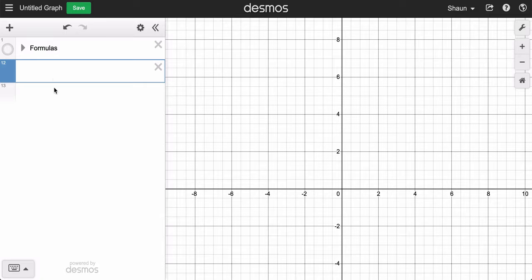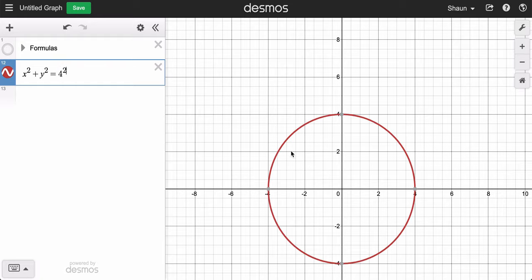You can create a circle centered at the origin by simply typing x squared plus y squared equals the radius squared, whatever radius you want. So if I want the radius to be 4, I would type 4 squared. And there's our circle.